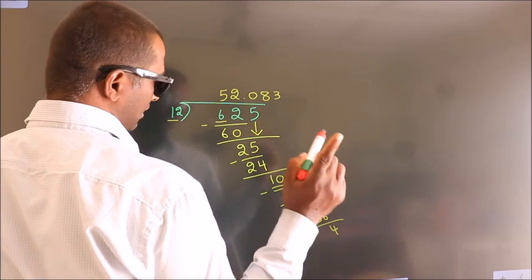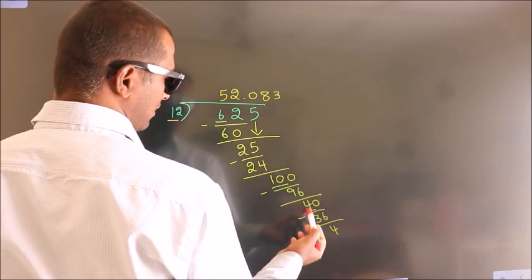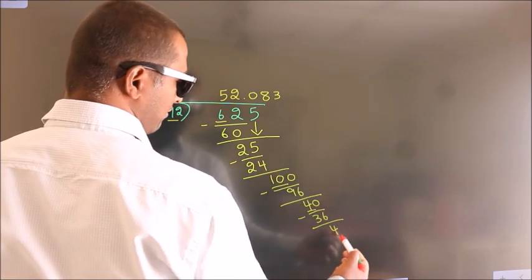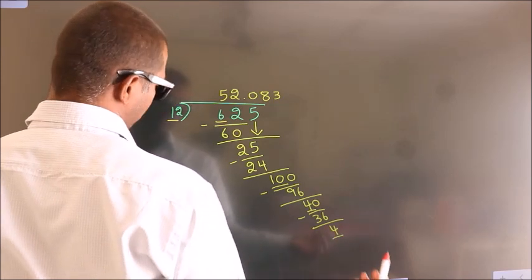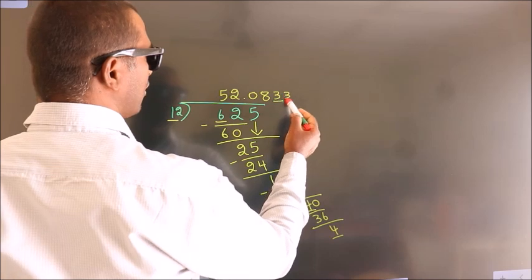Now observe: we had 4 as remainder, and we got 4 again. That means this number keeps repeating.